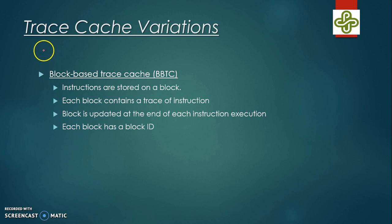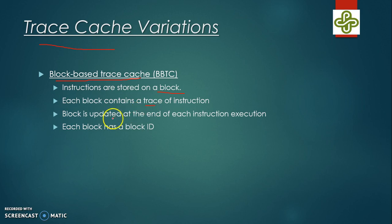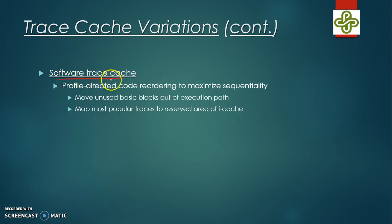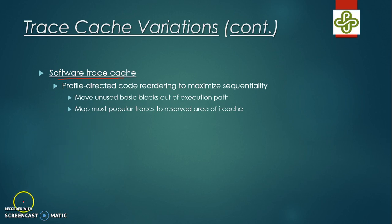There are some variations of the trace cache. The first is a block-based trace cache, where instructions are stored in blocks — each block contains a trace of instructions, is updated at the end of each instruction execution, and has a different block ID. Another variation is a software trace cache, which is highly advantageous in large codes with few loops. Combining software and hardware approaches has shown encouraging results.